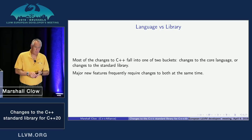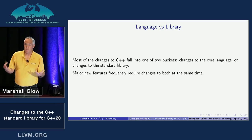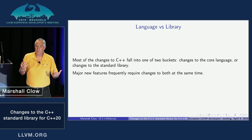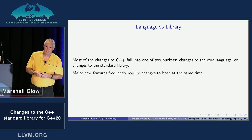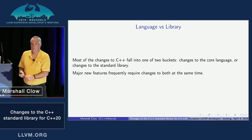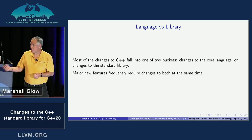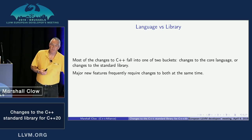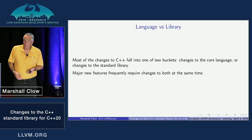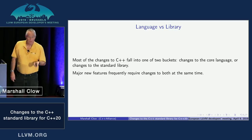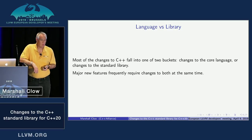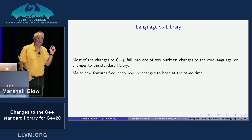I want to call a distinction between the core language and the standard library. They are not independent of each other, but in many ways they get developed independently. There are always features in the core language that affect the library and enable new library features, and things that happen in the library affect how the core language is developed. Major new library features frequently require core language changes.